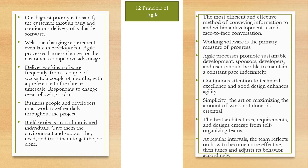Now let us go through the 12 principles of Agile. 1. Our highest priority is to satisfy the customer through early and continuous delivery of valuable software. 2. Welcome changing requirements even late in development. 3. Deliver working software frequently. 4. Business people and developers must work together daily throughout the project. 5. Build projects around motivated individuals. 6. The most efficient and effective method of conveying information to and within the development team is face-to-face conversation. Working software is the primary measure of progress.